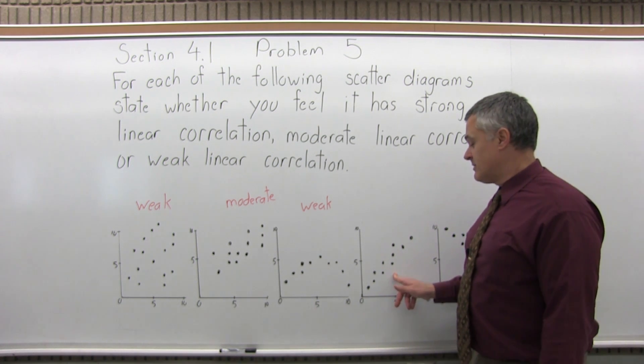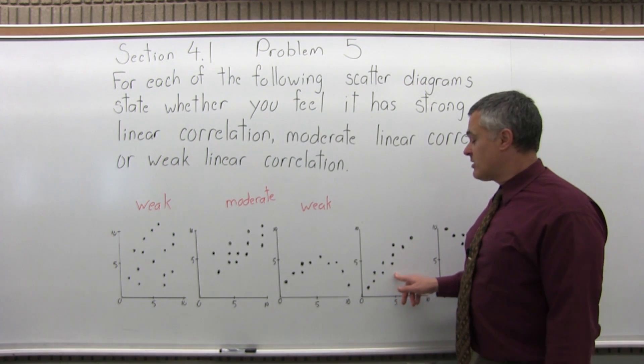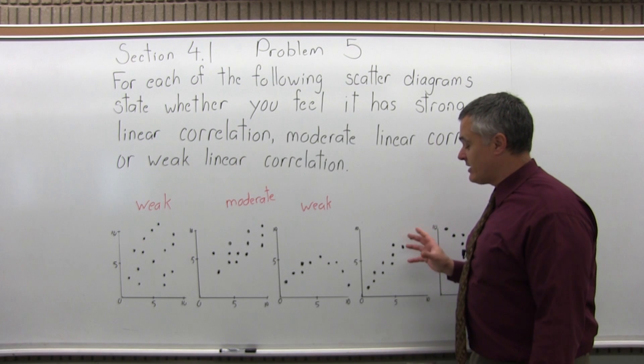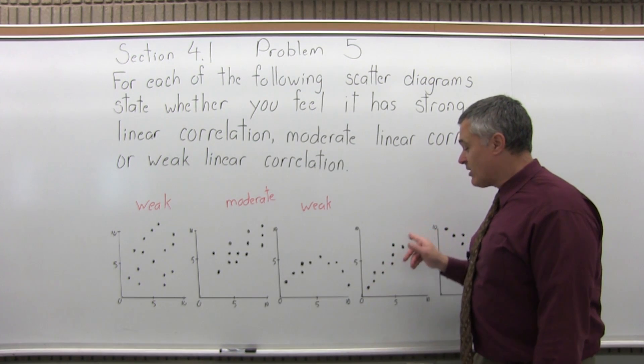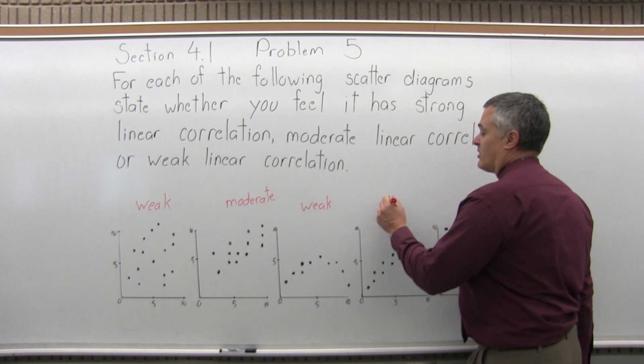Now, the next one, I would call that strong linear correlation. They're not right on the line. You're never really going to be able to expect to see that, but they're pretty close. So I would call that strong.